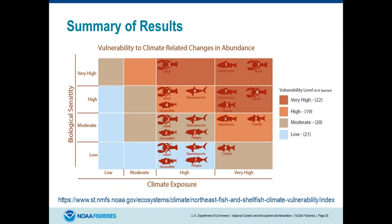Here's a nice summary of the results. The first implementation was in the Northeast on 82 species — we pulled all the species managed by the Northeast New England Fishery Management Council, Mid-Atlantic Fishery Management Council, by the states, as well as some forage species and other important species. The key thing to notice is that nothing was given a low or moderate on exposure. The expected climate change in the Northeast US ocean is large — there is more than a two standard deviation projected increase in temperature and more than a two standard deviation expected increase in ocean acidification. So everything fell out at high and very high in terms of exposure.